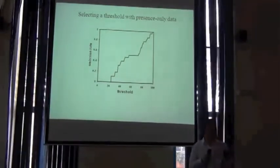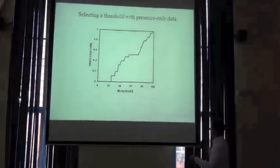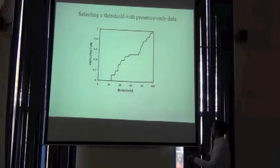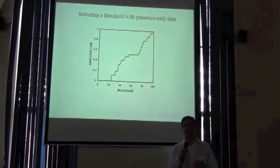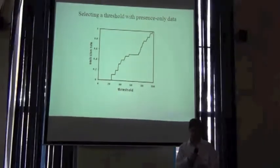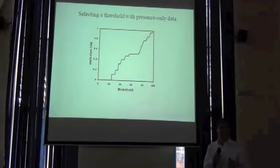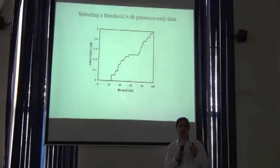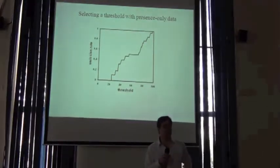We can use simple plots like this. In the case where we only have presence data — as is what we're mostly working with — we can do a simple chart where we show the range of possible thresholds on the x-axis. Suppose this is a prediction from GARP or some other algorithm giving a prediction from 0 to 100, where 0 is low suitability and 100 is high suitability. On the y-axis, we're plotting the omission rate — the proportion of points omitted from the prediction, meaning they're incorrectly predicted as falling outside the predicted area on a map.